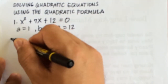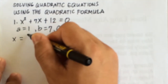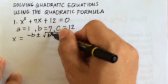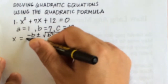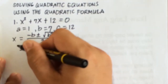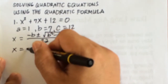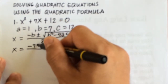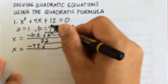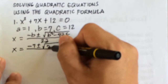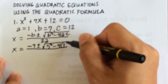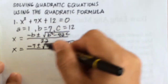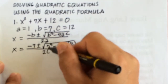Solving this using the quadratic formula: x equals negative b plus and minus the square root of b squared minus 4ac over 2a. Substituting those values, we have negative 7 plus and minus the square root of 7 squared minus 4 times 1 times 12, over 2 times 1.